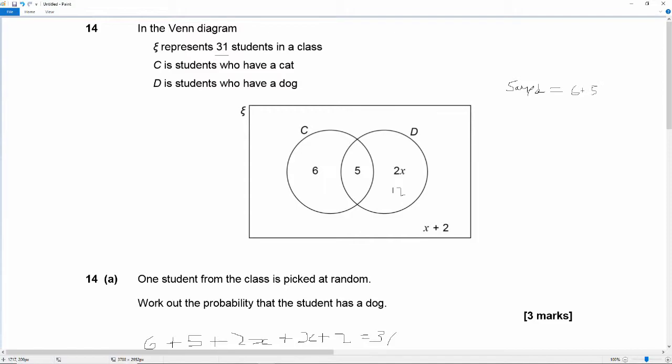6 and 6 is 12. 6 plus 5 is 11. What is wrong with my brain? 6 plus 5 equals 11.